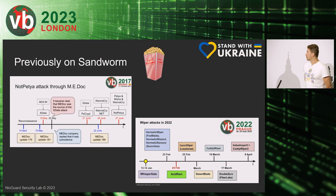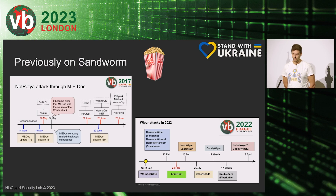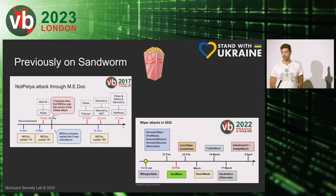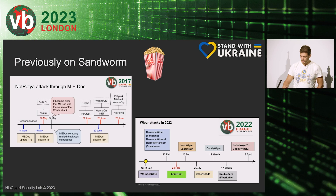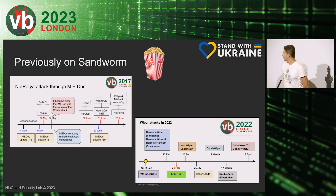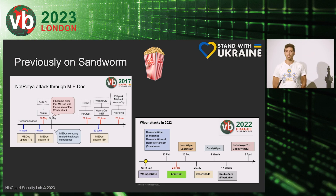One report was devoted to a NotPetya attack in 2017, and another report was about a chain of wipers used to destroy critical infrastructure in Ukraine in 2022. It all started when I was analyzing WhisperGate, one of the several kill chains for a file wiper, and I noticed that it used a fileless technique that had never been used before.